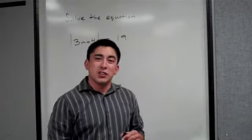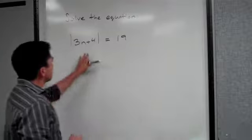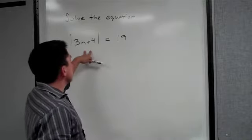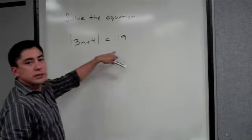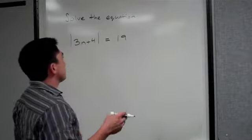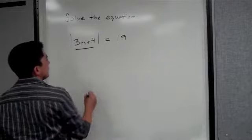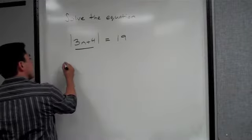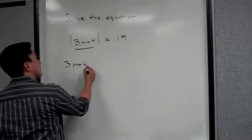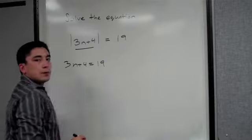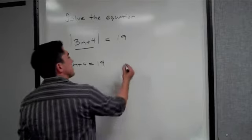So I'm going to show you how to do that again. The example problem that we did was the absolute value of 3n plus 4 is equal to 19. What you have to remember is the absolute value, the inside can equal 19, so we put 3n plus 4 equals 19, but also the inside could equal negative 19.